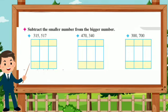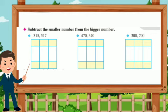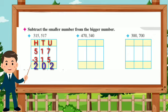Subtract the smaller number from the bigger number. Let's see: 517 minus 315 is equal to 202.